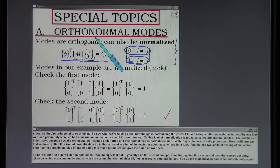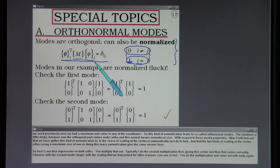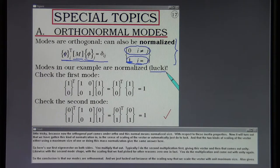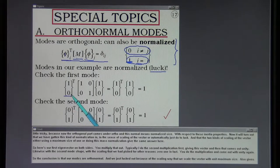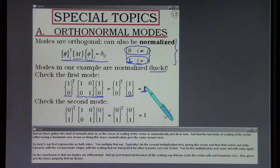The notation is a little tricky because now the orthogonal part comes under ortho and this normal means normalized size with respect to these inertial properties. It will turn out that we have gotten this kind of normalization in the sense of scaling of the vector automatically just due to luck. The two kinds of scaling of the vector either using a maximum size of one or doing this mass normalization give the same answer here. Here's our first eigenvector on both sides. You multiply that out. Typically I do the second multiplication first giving this vector and then that comes out unity.